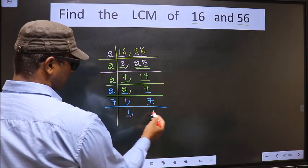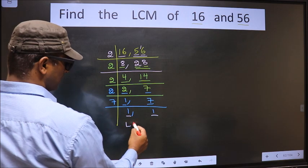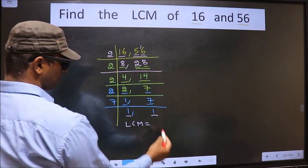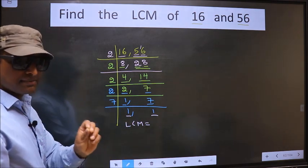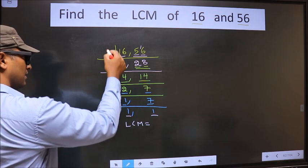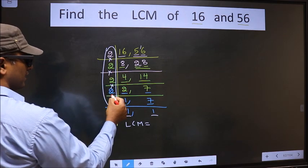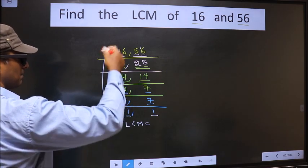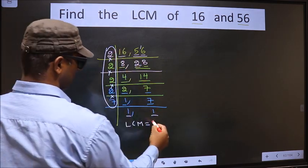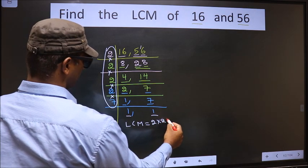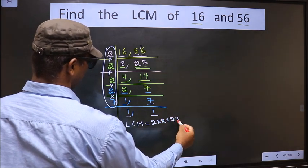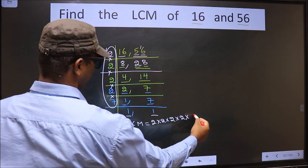We got 1 in both places, so our LCM is the product of these numbers. Product of these numbers, that is 2 into 2 into 2 into 2, finally into 7.